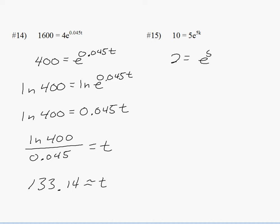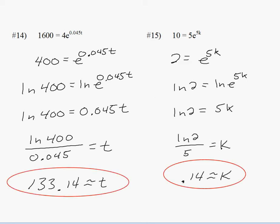Number 15, if you divide both sides by 5, you get 2 equals e to the 5k. Natural log both sides. Then divide both sides by 5. Put it in your calculator. You get k is 0.14.